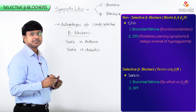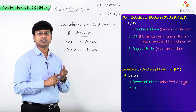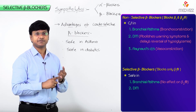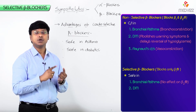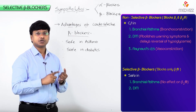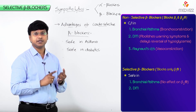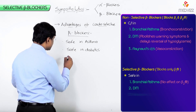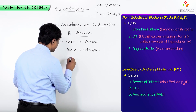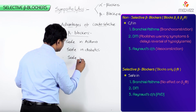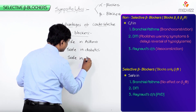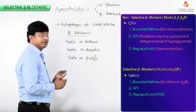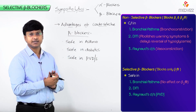Non-selective beta blockers are contraindicated in patients with Raynaud's disease, a peripheral vascular disease, because beta-2 blockade causes vasoconstriction. Whereas these cardioselective beta-1 blockers are safe in peripheral vascular disease.